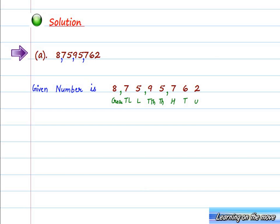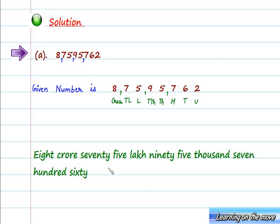We can write this here. The name according to the Indian system of numeration is 8 crore, 75,95,762.